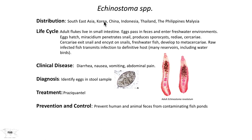Echinostoma is a minor group of trematode infections found in various specific places: the southern part of East Asia, Korea, China, Indonesia, Thailand, the Philippines, and Malaysia. The adult fluke lives in the small intestine. The eggs pass in the feces and enter freshwater environments, infecting snails. The snails then release cercariae. Cercariae encyst under the scales of freshwater fish. Fish are eaten raw — sounds familiar. It's the same general scenario as for Clonorchis, Heterophyes, Metagonimus, and in this case, Echinostoma. The eggs are identifiable in stool.